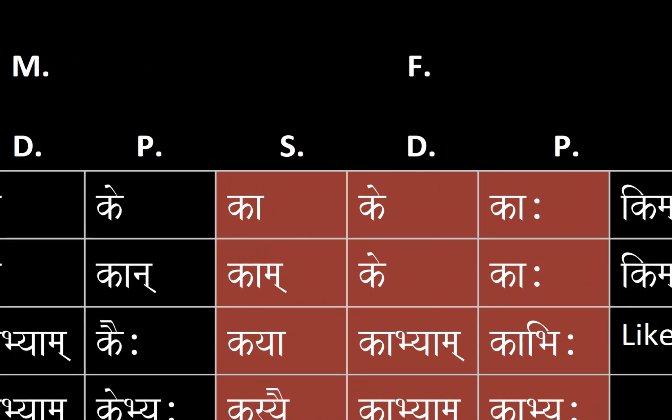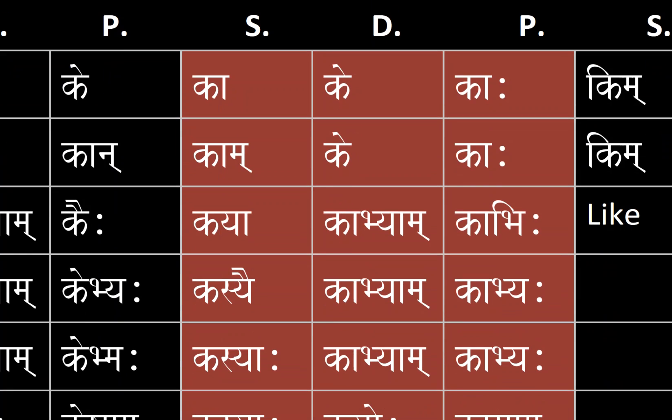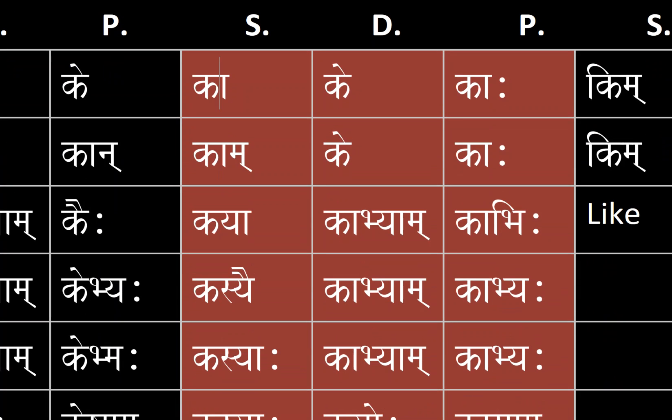Now for the feminine. For nominative singular, dual, and plural we have kā, ke, and kāḥ. For accusative singular, dual, and plural we have kām, ke, and kāḥ. For instrumental singular, dual, and plural we have kayā, kābhyām, and kābhiḥ.